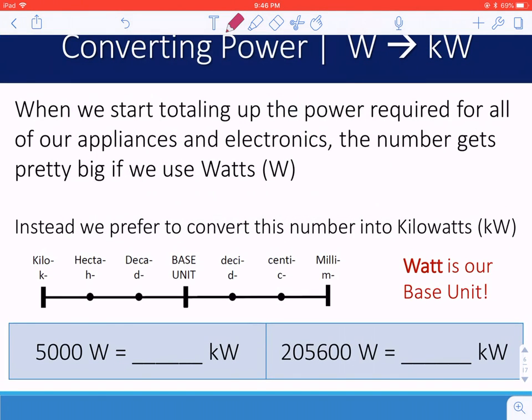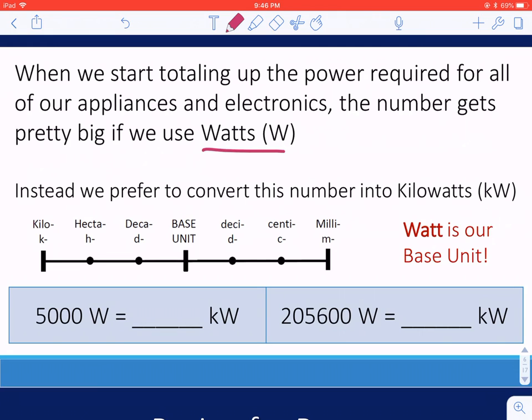Now, if we're calculating power, we typically use watts as our SI unit, but if we refer to this as the amount of power that a household has for many appliances, watts is not enough. Generally, we can convert that to kilowatts. Watt is our base unit here, so kilowatts from watts is just three decimal places to the left. So 5,000 watts turns into 5 kilowatts. 205,600 watts turns into 205.6 kilowatts.